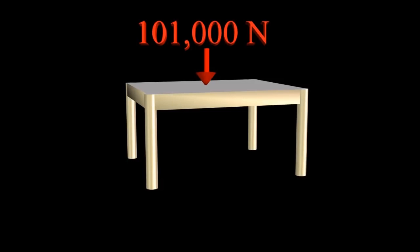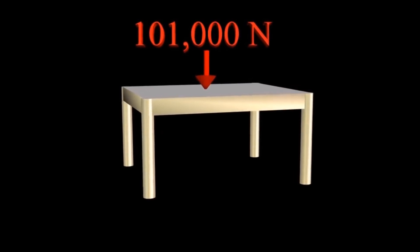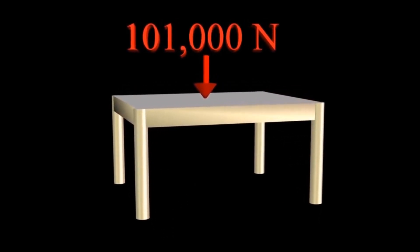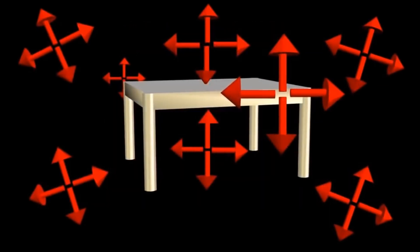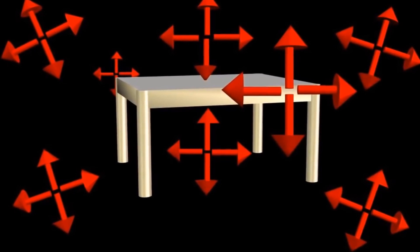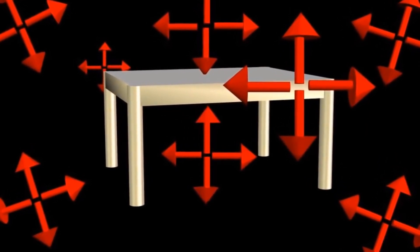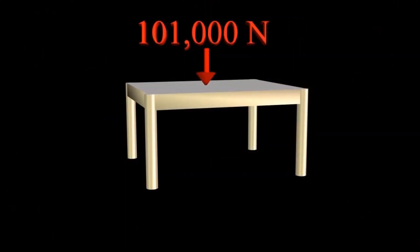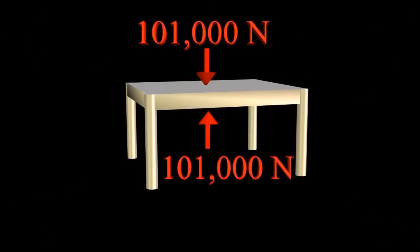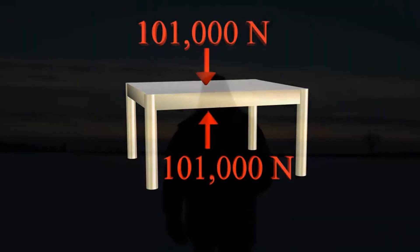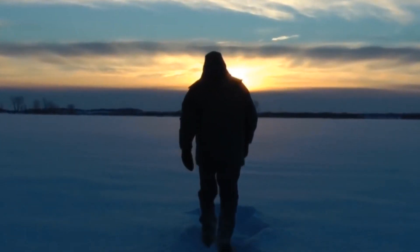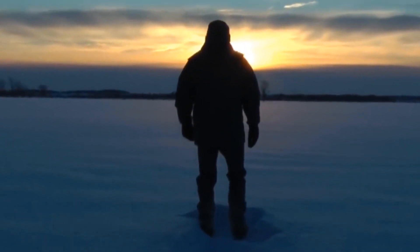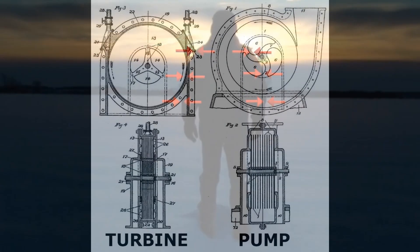If air pressure can generate such huge forces, why don't we notice it? Why doesn't the table collapse? It turns out that pressure in a fluid like air transmits in all directions, not just down. This means that the 101,000 newtons of force pushing down on the tabletop is balanced by 101,000 newtons pushing up. Forces are balanced. Similarly, our bodies are not crushed because the fluids contained within our skin exert a pressure that balances atmospheric pressure.